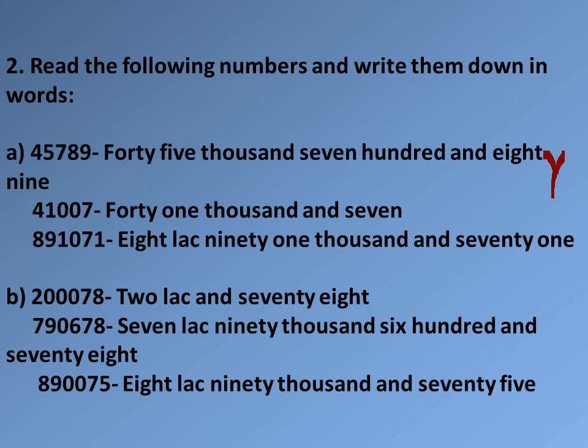Now number 2: read the following numbers and write them down in words. Number a: 45,789 — which is forty-five thousand seven hundred and eighty-nine.